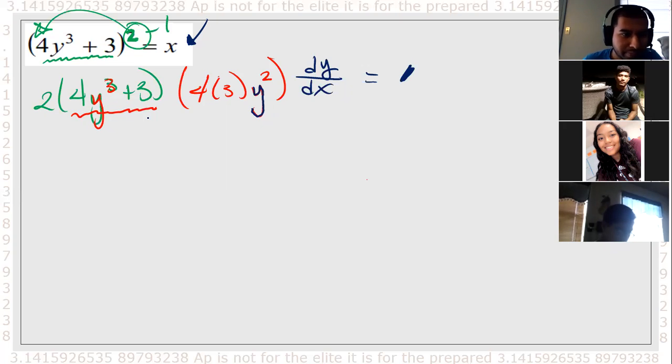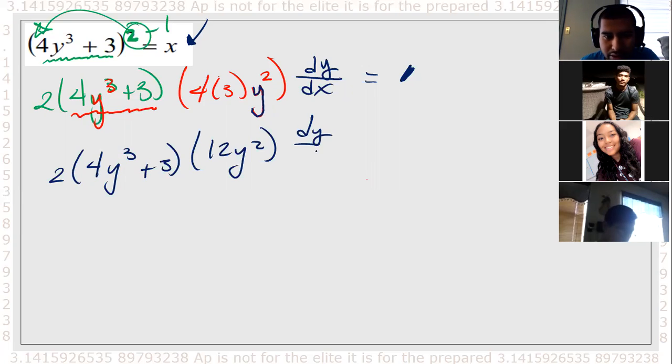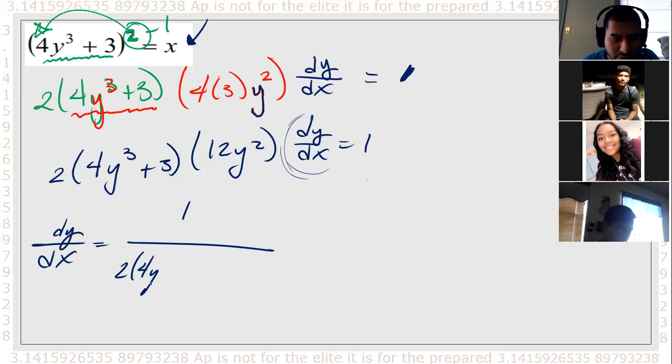Now we can go ahead and make stuff nicer. You don't need to, honestly, since they will accept unsimplified answers, but this looks like it'll work - dy/dx equals 1. Last but not least, we solve for this dy/dx, right? So it's going to be dy/dx equals 1 divided by all this good stuff: 2(4y³ + 3)(12y²). So that would be our solution.